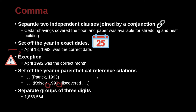We also use the comma in numbers — every three digits. This is something that often confuses students, because numbering systems differ across languages. Remember: three digits, then a comma; three more digits, then a comma, and so on. So for thousands you have a comma, and for millions you have a comma.